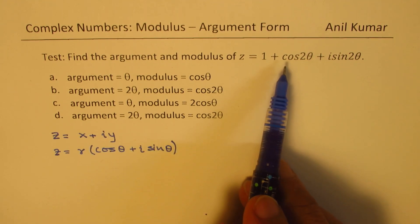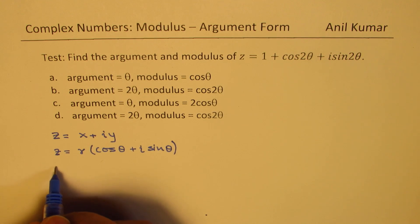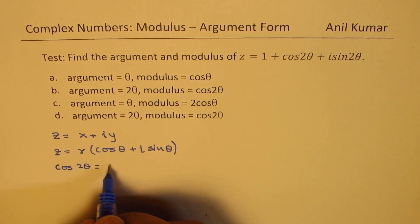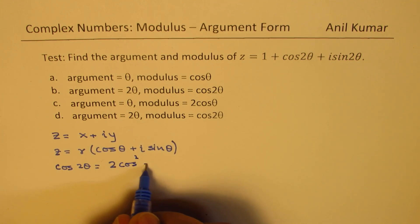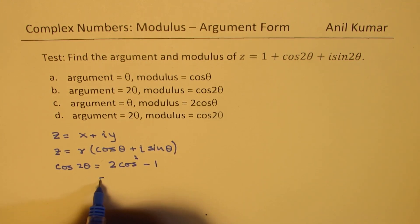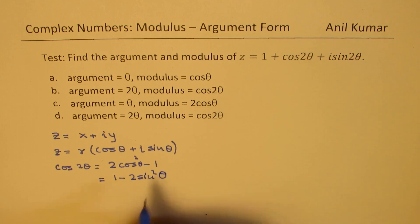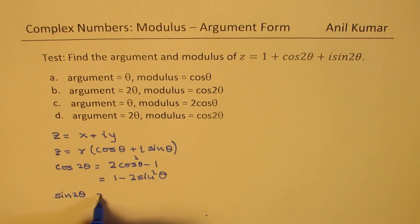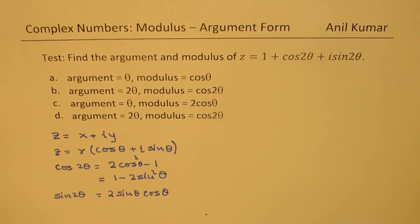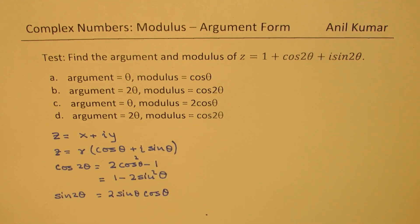We have a term which is cos 2 theta and sine 2 theta. Well, cos 2 theta can be written as 2 cos square theta minus 1 or it could also be written as 1 minus 2 sine square theta. As far as sine 2 theta is there, sine 2 theta is 2 sine theta cos theta. Some of these formulas may be required to answer this particular question.